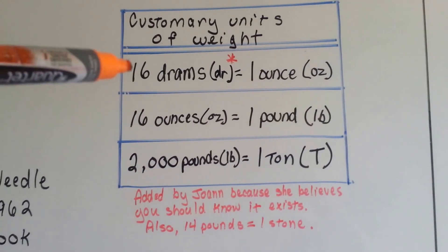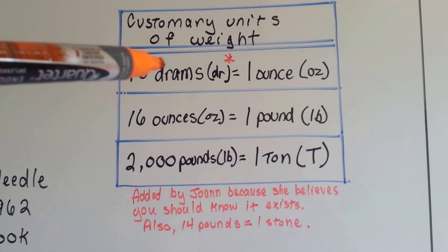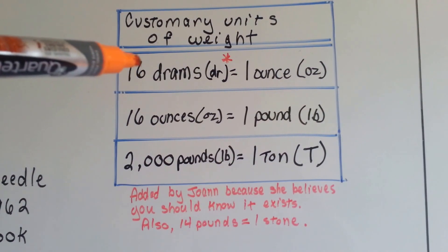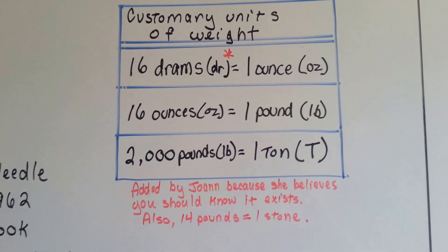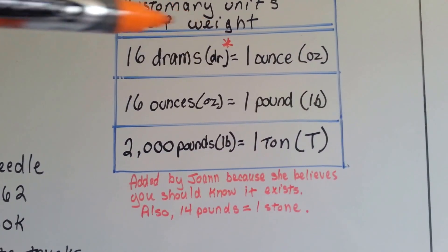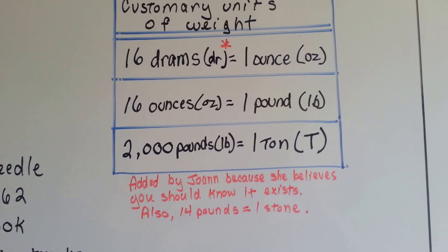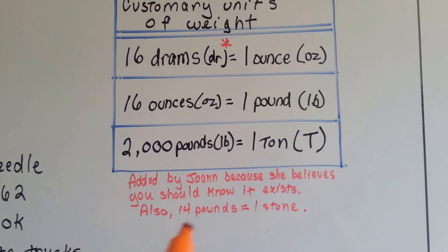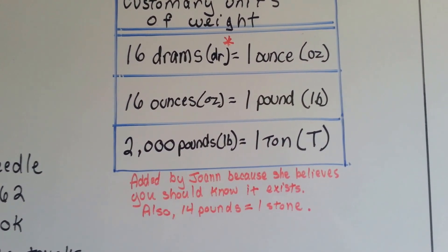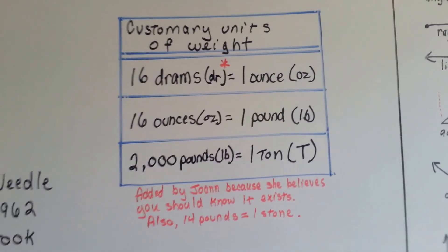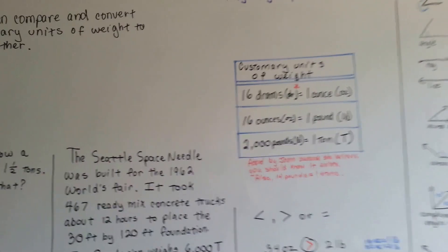this was not in the book, 16 drams is equal to 1 ounce. And I just wanted to mention that because I believe you should know that drams exist. And that it takes 16 of them to make a little ounce. There's also a thing called a stone that is equal to 14 pounds. 14 pounds equals 1 stone. So it's not in the book, but it doesn't hurt to know it, right?